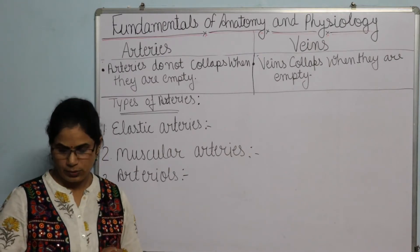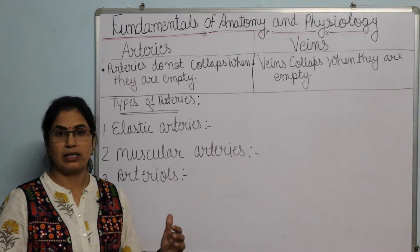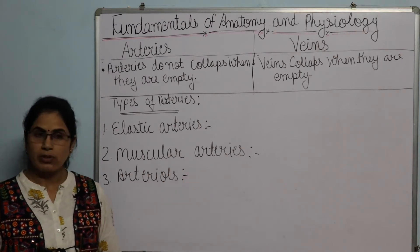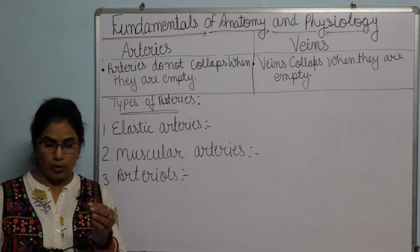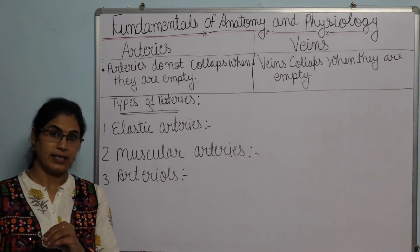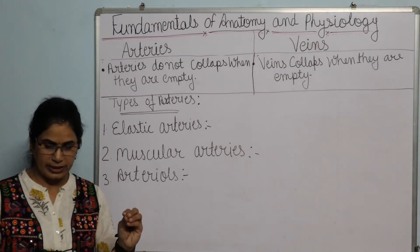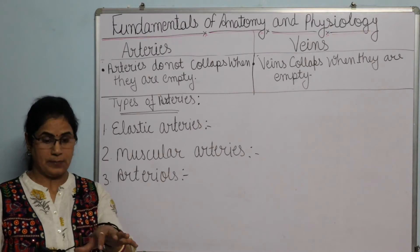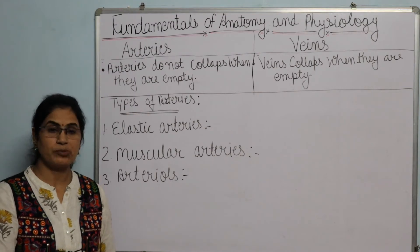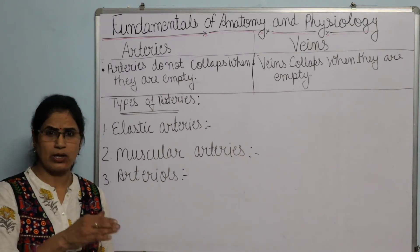Elastic arteries are about 3 centimeters in size and have a lot of elasticity in the body. The second type is muscular arteries, which are medium-sized and carry blood to different organs. This is why they are called distributing arteries — they distribute blood of the medium-sized arteries to different organs.